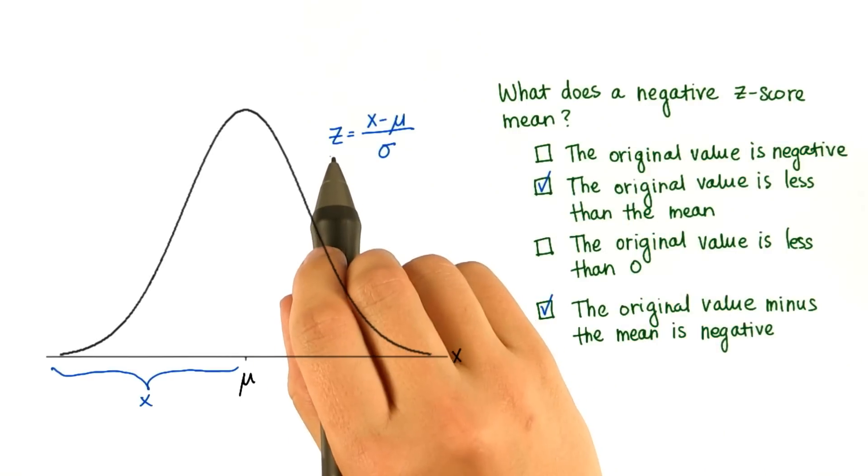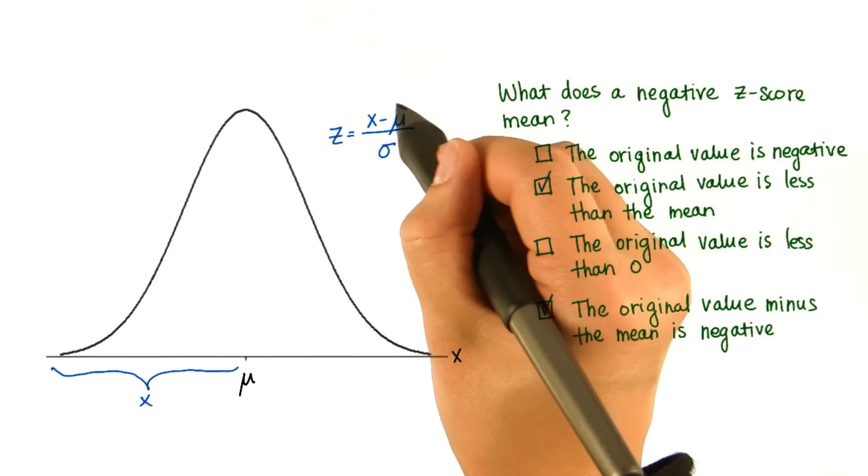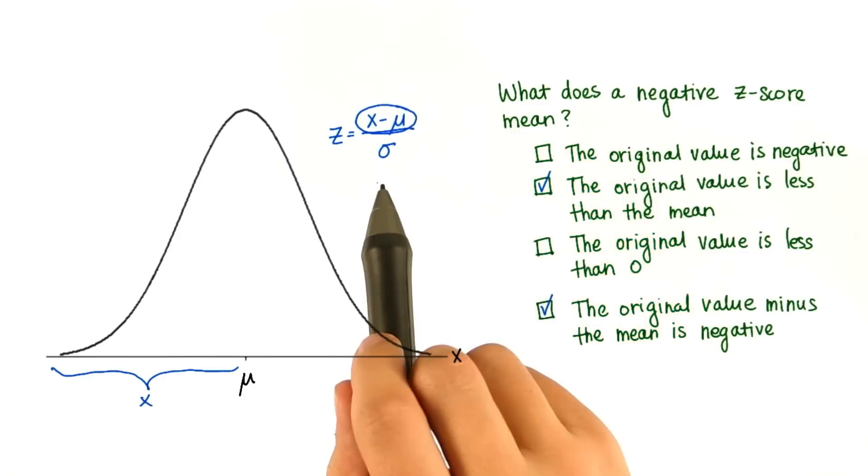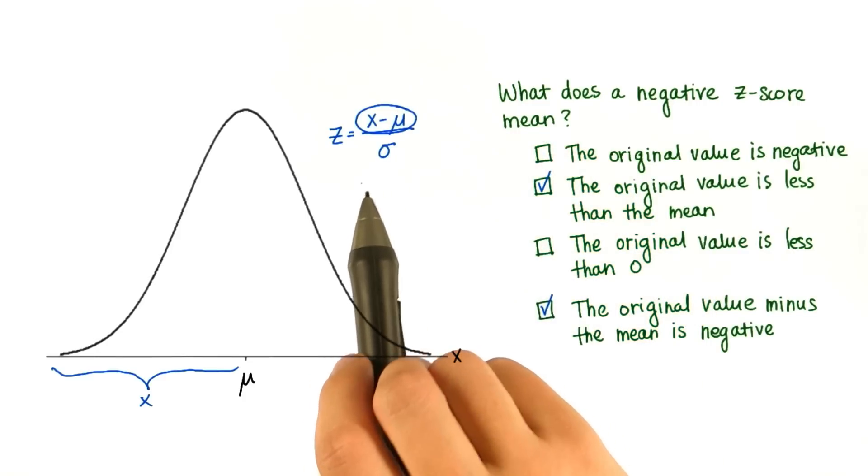Because for the z-score to be negative, then this is going to be negative, because the standard deviation is always positive.